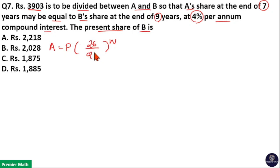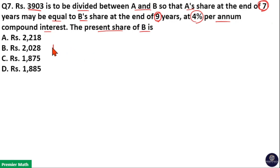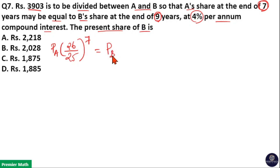The amount at the end of 7 years is equal to the amount at the end of 9 years. So: Principle of A × (26/25)^7 = Principle of B × (26/25)^9, because the amount at the end of 9 years equals the amount at the end of 7 years.